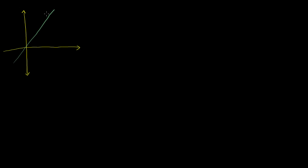We know that a line in any Rn — we're doing it in R2 — can be defined as just all of the possible scalar multiples of some vector. So let's say that this is some vector right here that's on the line. We can define our line. We could say L is equal to the set of all the scalar multiples. Let's say that that is vector V right there.